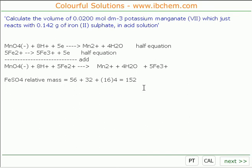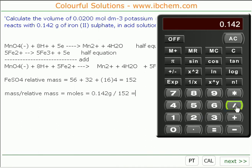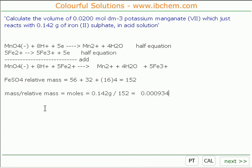Okay, so now we must turn the mass of iron II sulphate into moles. Mass divided by relative mass equals moles. So the moles is equal to the mass that we have, which is 0.142 grams, divided by the relative mass, which is 152. Let's consult the oracle. 0.142 divided by 152, and that comes to 0.000934.